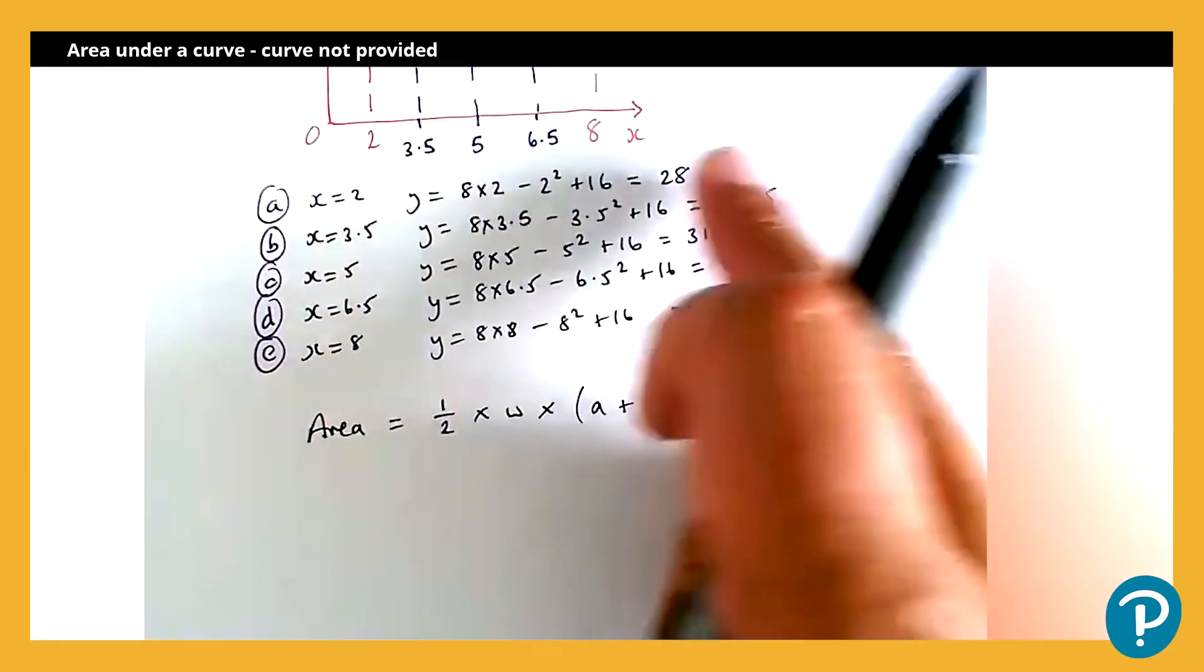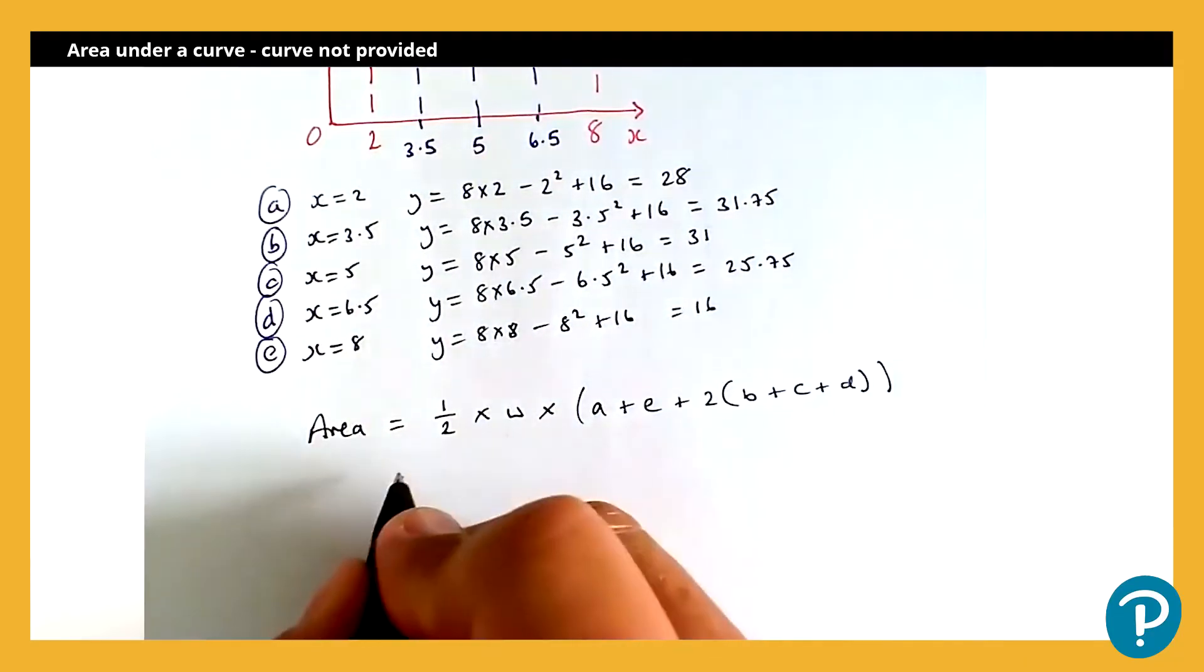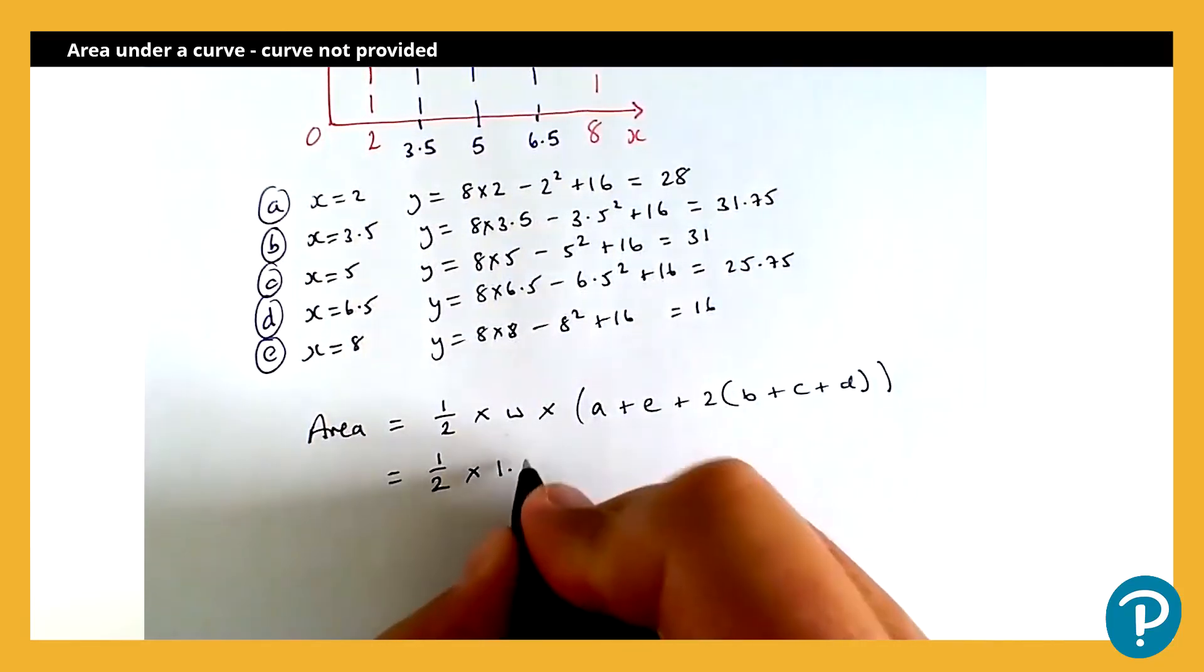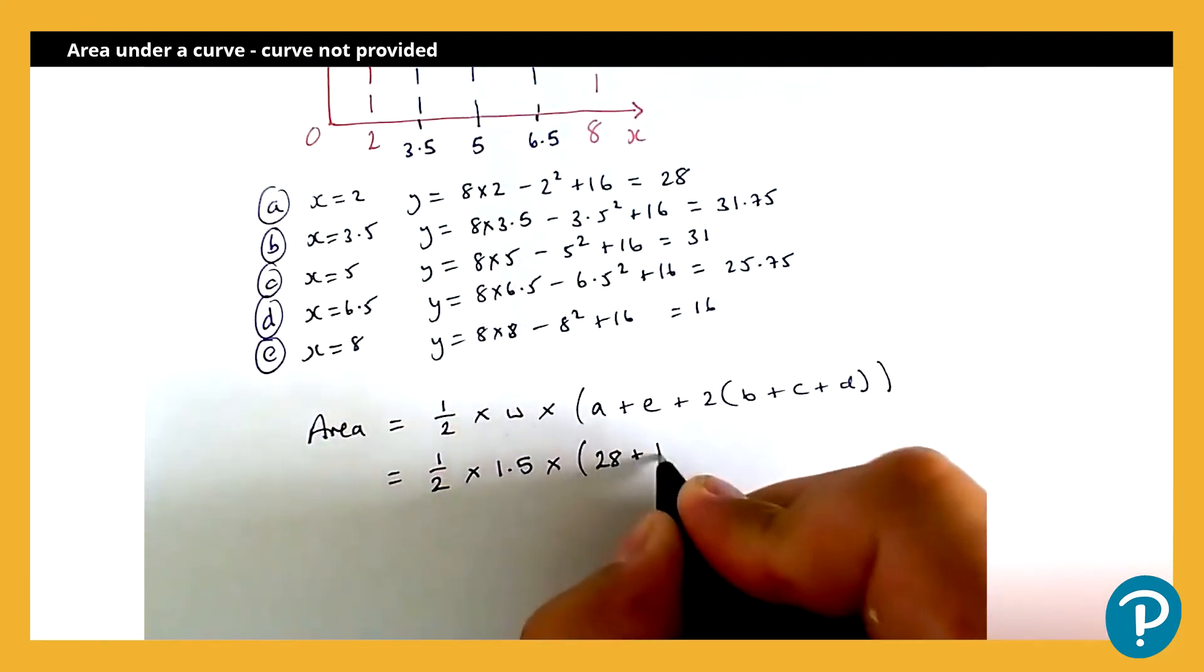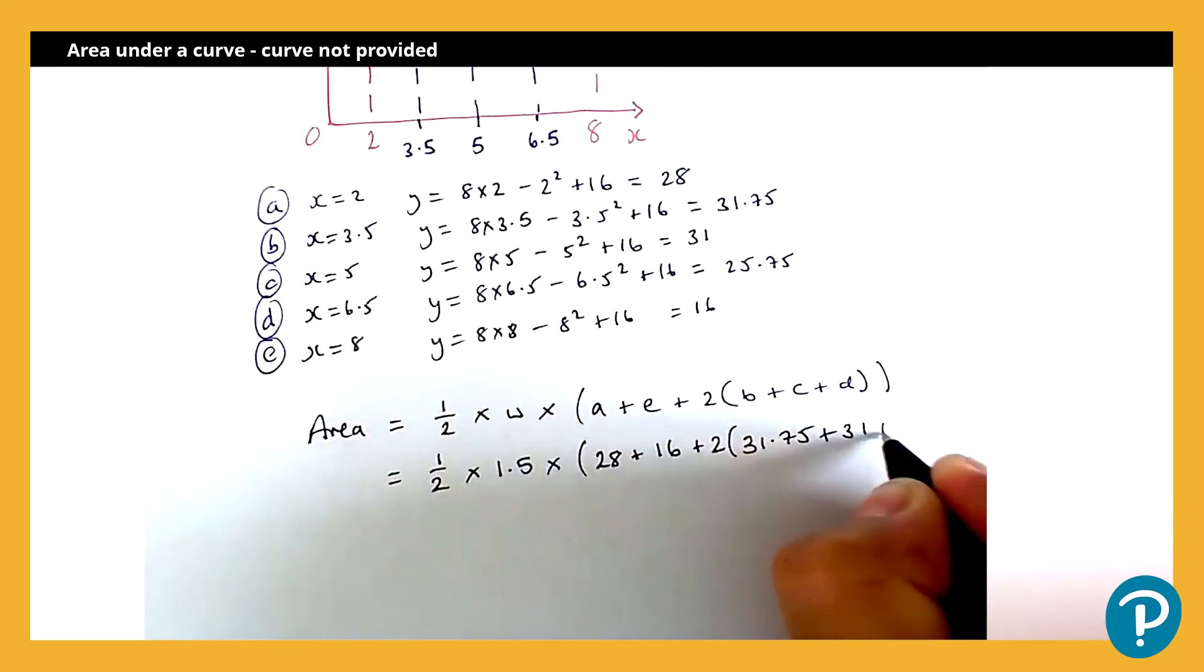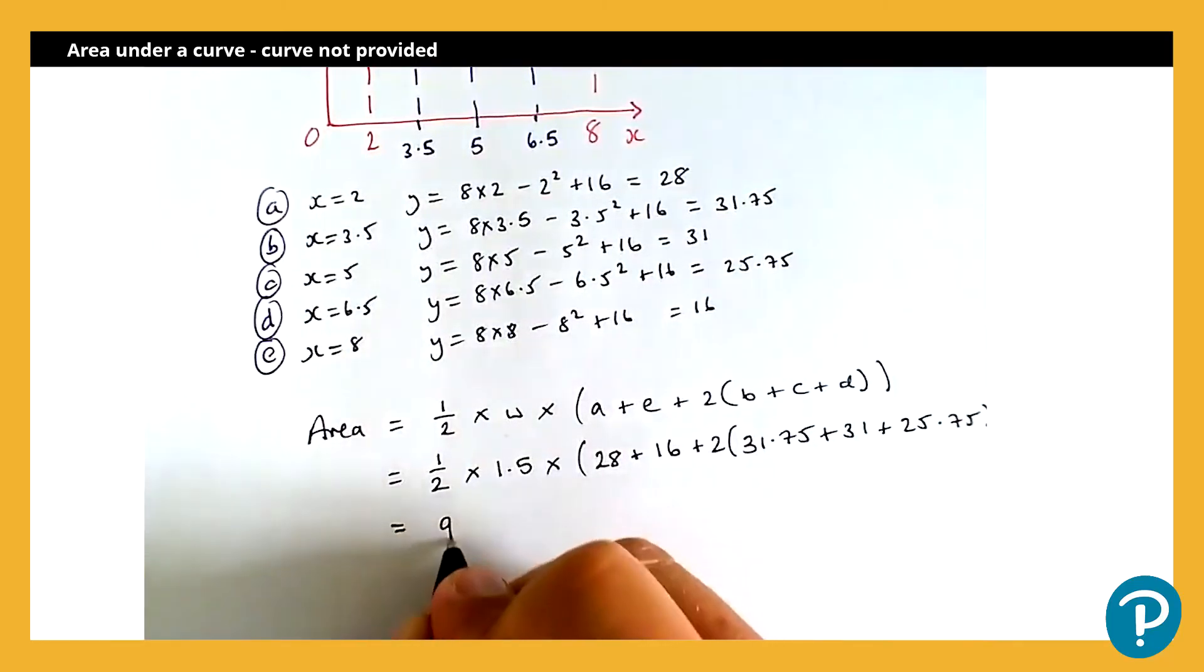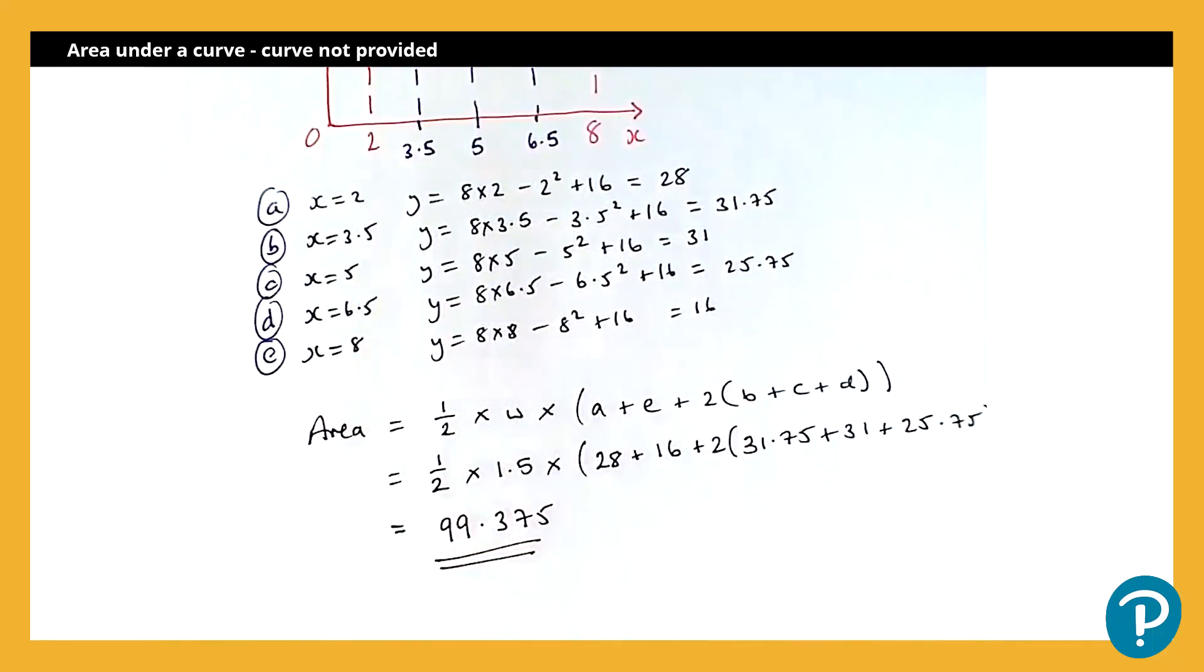Now, all we need to do is substitute our generated values into this expression and pop it all onto my calculator. So that's a half times the width of each strip, which we calculated earlier to be 1.5. And then a is 28, e is 16. And then we have two lots of 31.75 plus 31 plus 25.75. All that into my calculator, we get an answer of 99.375. That's my final answer.